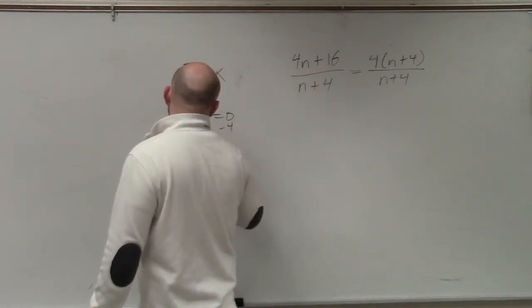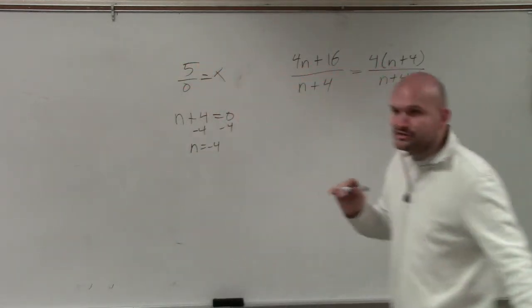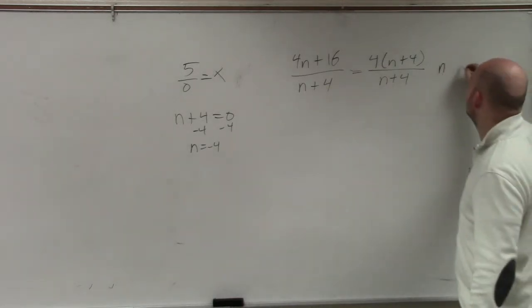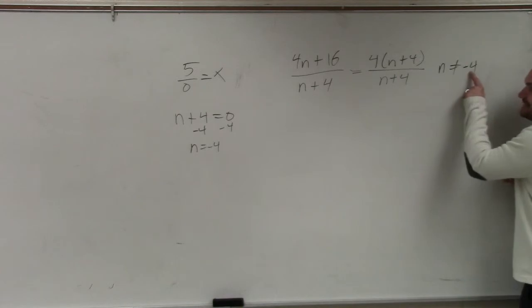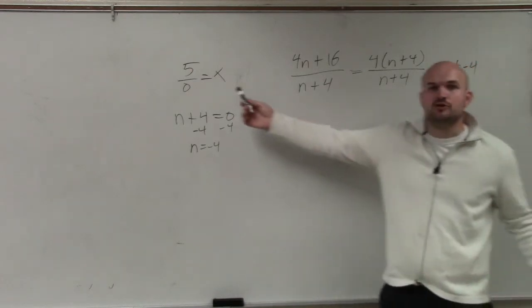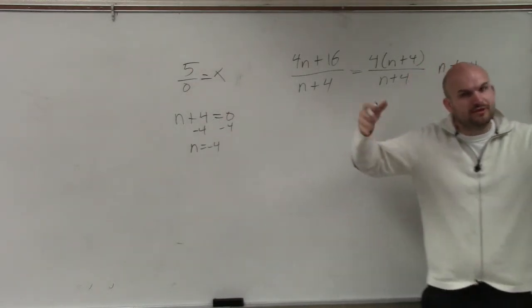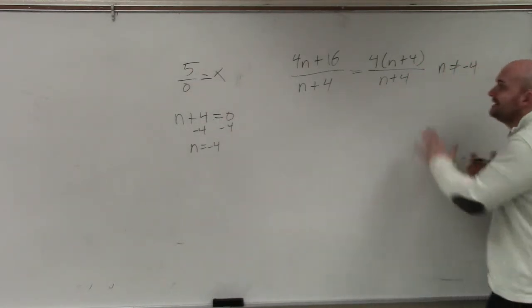So n equals negative 4. When you find your answer, you're going to say n cannot equal negative 4. Because what if I take negative 4 and put it in for n? Negative 4 plus 4 would equal 0, meaning we would have no solution. So even though we're simplifying, we're adding in this restriction.